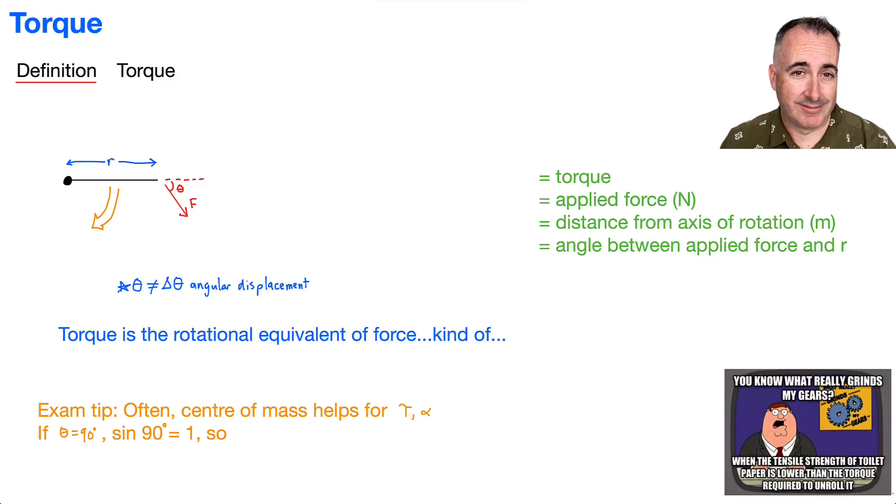So we're going to talk about torque. That's why I put this in my hair down for Family Guy. You know what grinds my gears? When the tensile strength of toilet paper is lower than the torque required to unroll it. When a piece of paper pulls off too fast. Okay, so let's talk about torque itself. What do we mean by this?